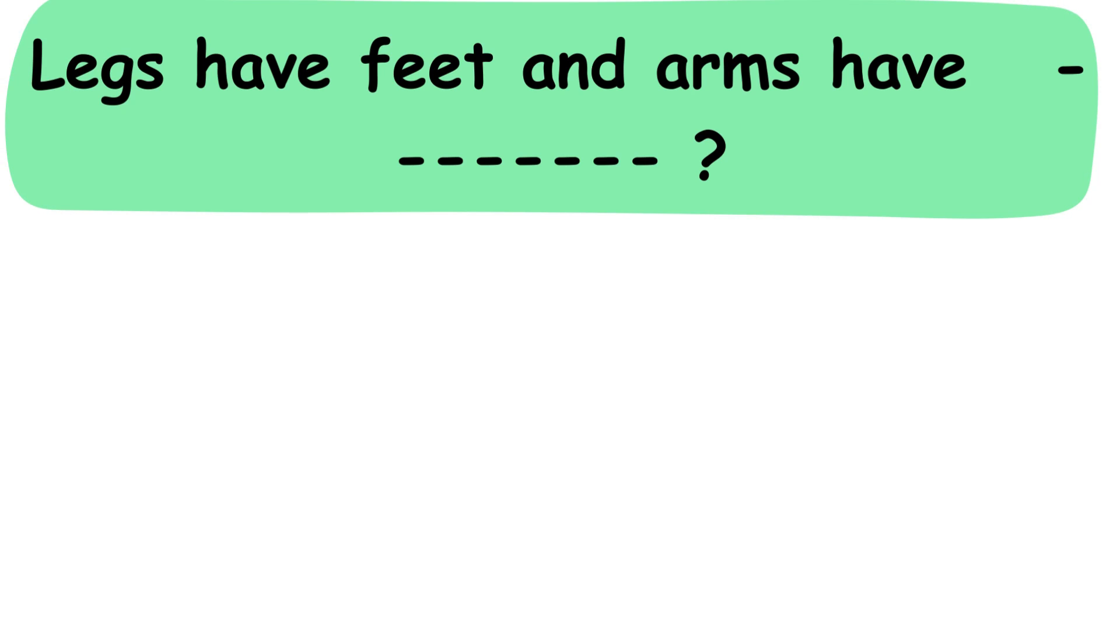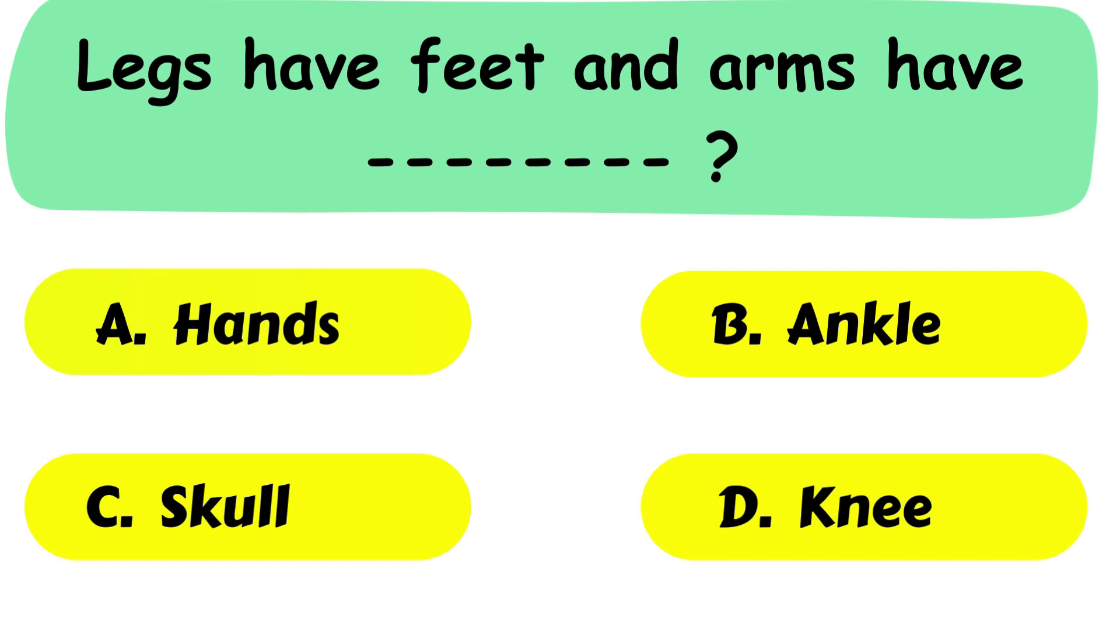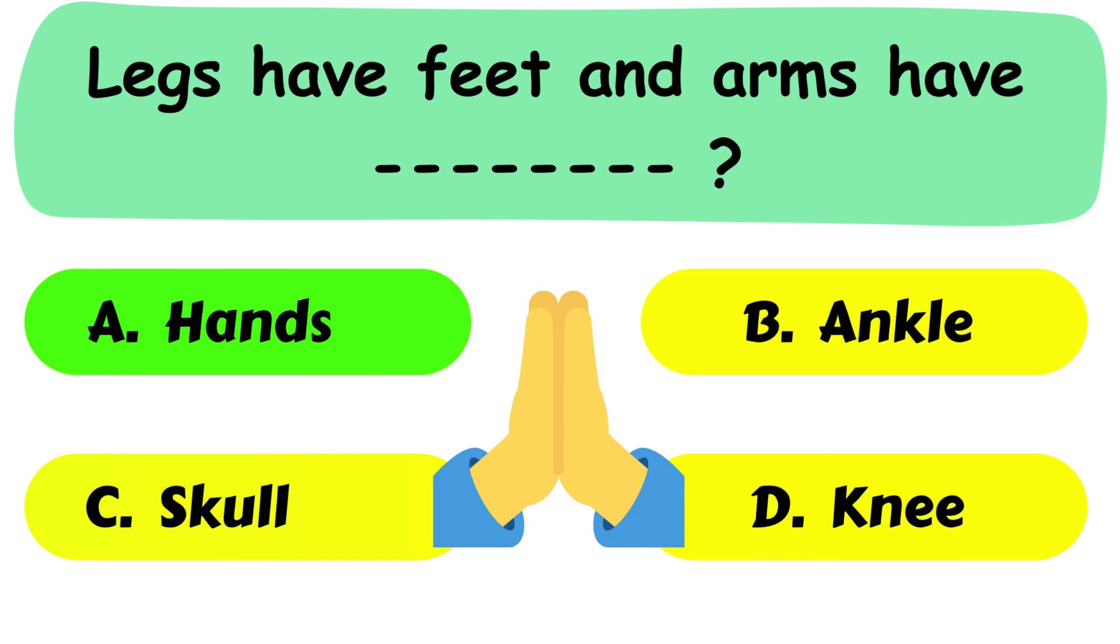Question No. 1. Legs have feet and arms have dash. A. Hand. B. Ankle. C. Skull. D. Knee. The correct answer is option A. Hands.